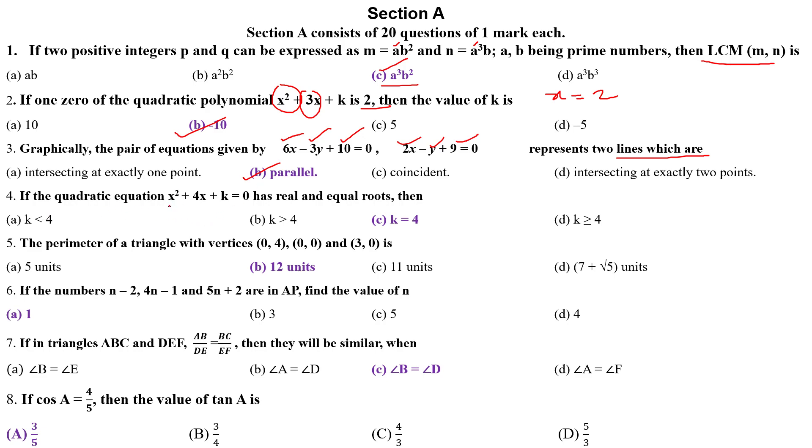If the quadratic equation x squared plus 4k plus k equals 0 has real and equal roots, then value of k is? Let's see. Real and equal, b squared minus 4ac. 4 is a 16. 4ac is 16 minus 4 into k. 4k equals 16, then k equals 4. Option C is the correct answer.